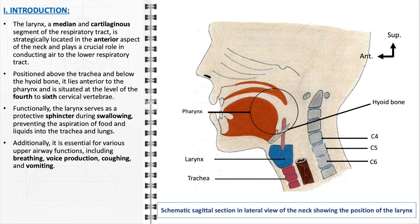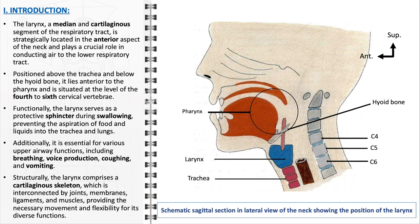Beyond its role in swallowing, the larynx is indispensable for various upper airway functions. It facilitates breathing by maintaining an open airway, contributes to voice production through the vibration of its vocal cords, aids in the cough reflex to expel irritants from the respiratory tract, and plays a role in the mechanism of vomiting, ensuring the airway is protected during this reflex. The structural integrity of the larynx is maintained by a robust cartilaginous skeleton comprising elements like the thyroid, cricoid, and arytenoid cartilages, intricately connected by a series of joints, membranes, ligaments, and muscles, allowing precise movements for adjusting vocal cord tension, opening the airway for breathing, and closing it during swallowing.